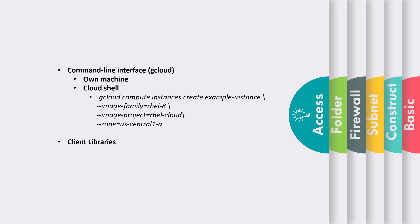Before I end this lecture, I'd like you to open your Cloud Shell and create a gcloud compute instance. Once that instance is created using the command shown on the screen, investigate which particular project, zone, and region that VM instance was created in. Just run this command and discover those details. I hope this was useful and I'll keep providing more such lectures on GCP. Thank you.